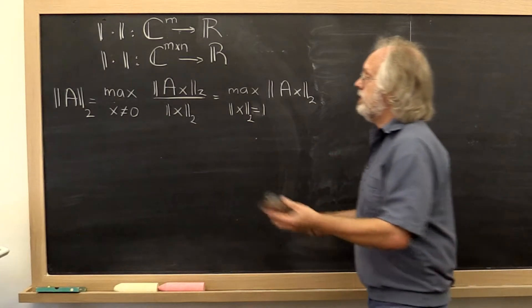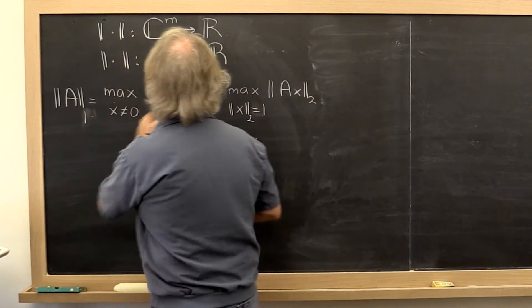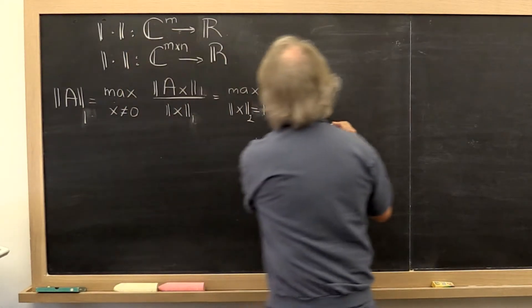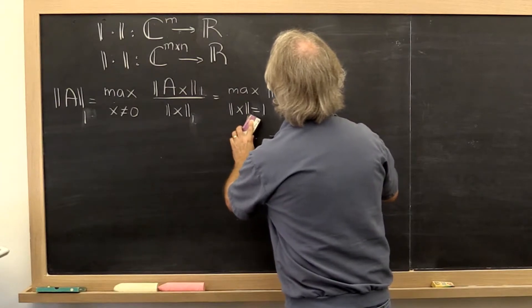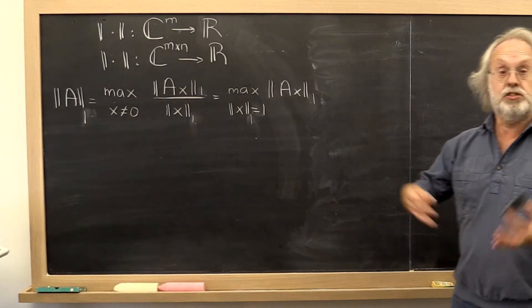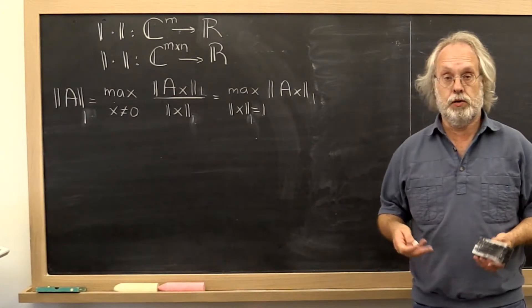So, moving right along, you can similarly define the matrix 1 norm. And you might say, well, that's just as hard to evaluate as the matrix 2 norm. I don't see the difference.